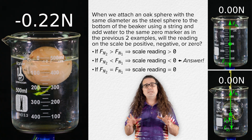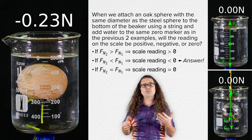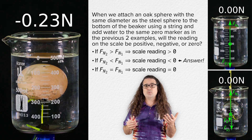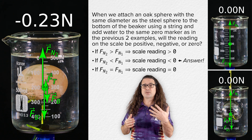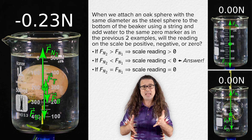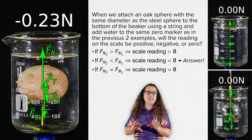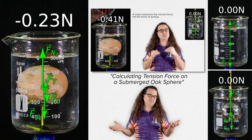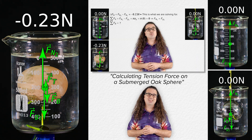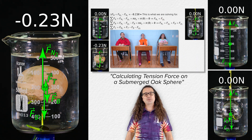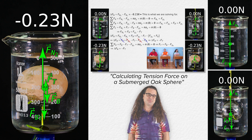Now, we can actually solve for the negative 0.23 Newton reading on the scale when the oak sphere is submerged in the water and attached to the beaker via the string. However, we are going to do that in our next lesson, not today. Thank you very much for learning with me today. I enjoy learning with you.